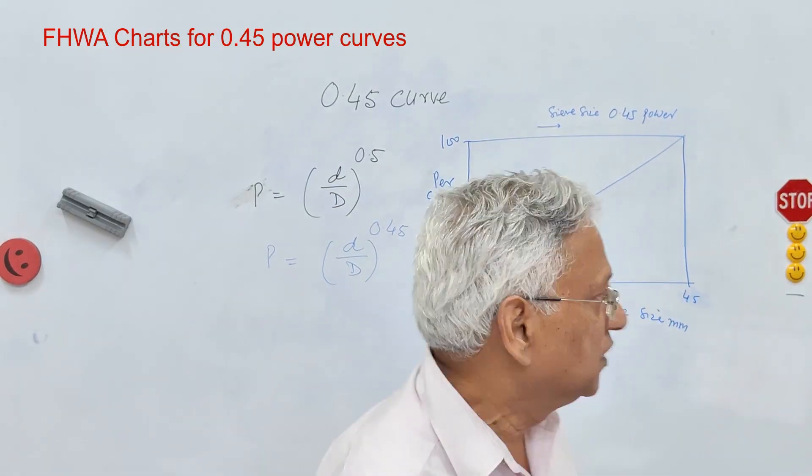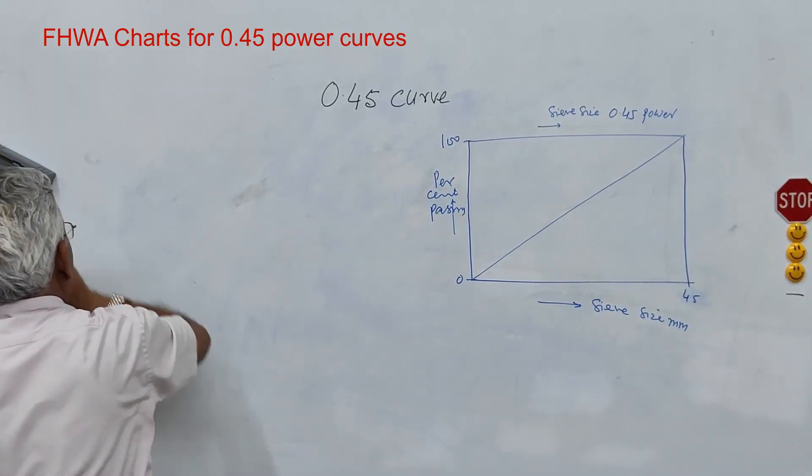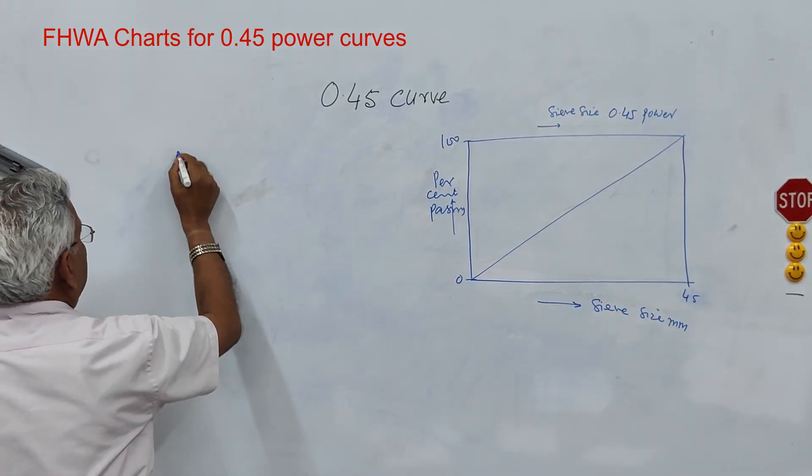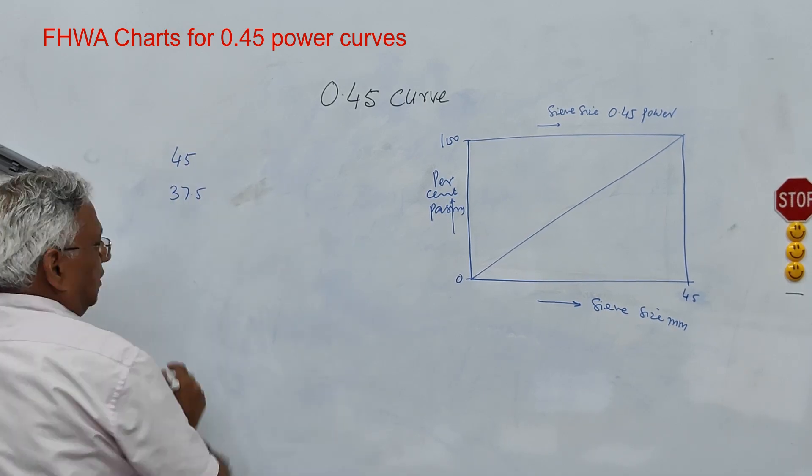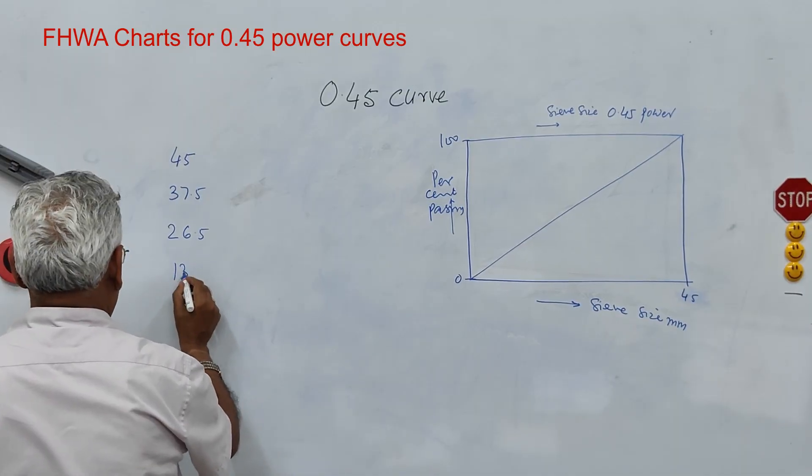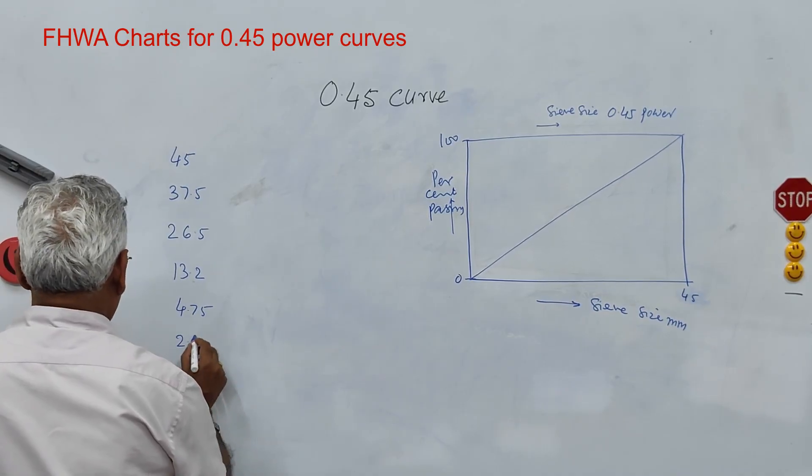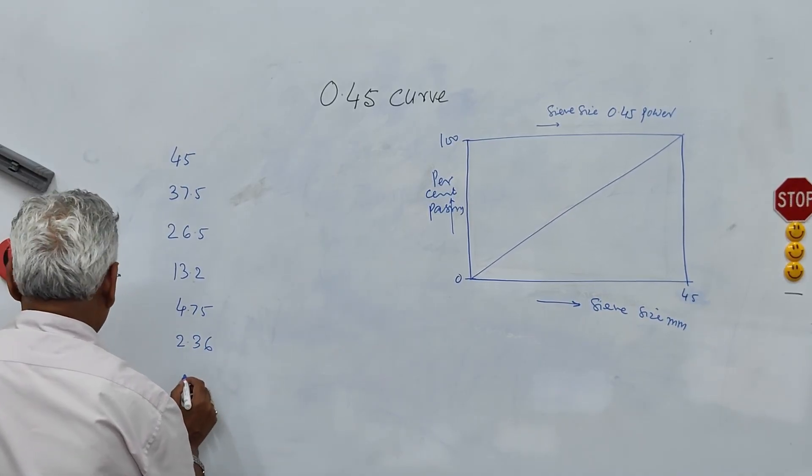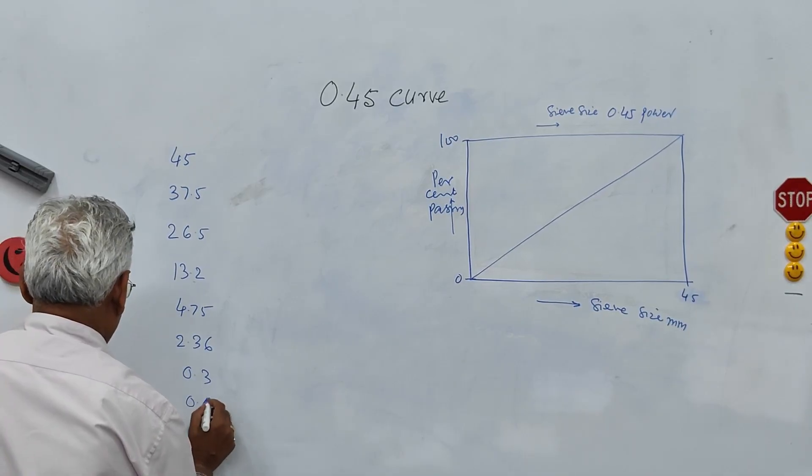Suppose as per Ministry of Road Transport and Highway specification, the grading for DBM Grade 1 is starting with 45 millimeter, 37.5, 26.5, and 13.2, 4.75. These are the sieve sizes for DBM, 2.36, 0.3, 0.075.